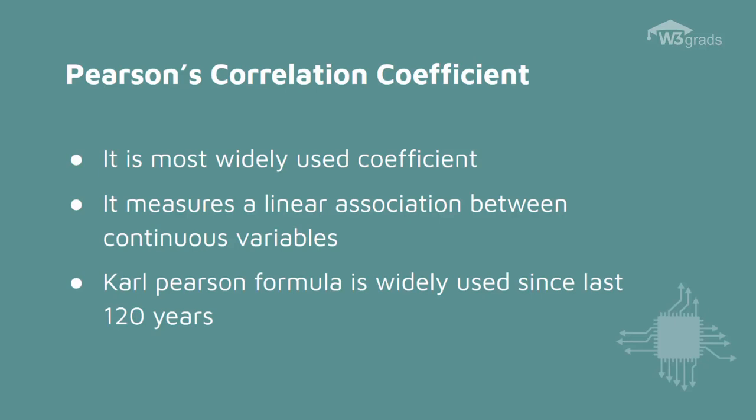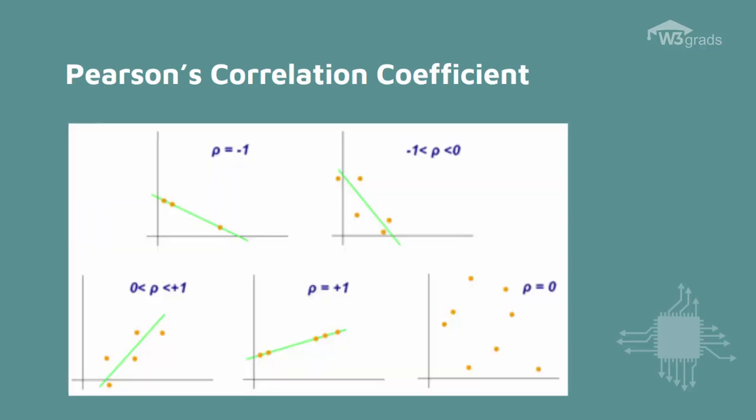Remarkably, while correlation can have many interpretations, the same formula developed by Karl Pearson over 120 years ago is still the most widely used today. The image shows three examples of Pearson correlation. The closer rho is to one, the more an increase in one variable associates with an increase in the other.